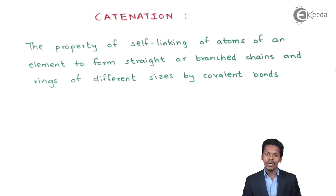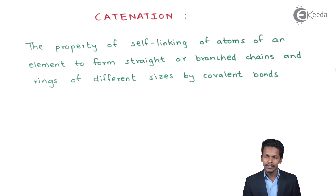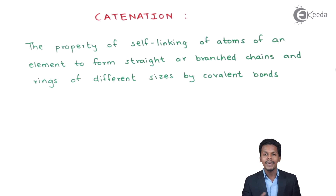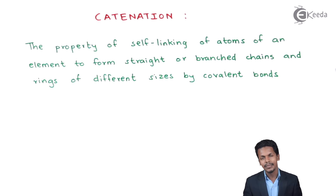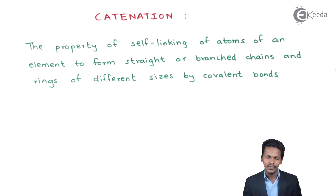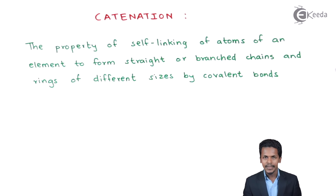In this case we are talking about carbon, because carbon is the only element in group 14 which prominently shows the property of catenation. The other elements also have some capacity to show catenation but not nearly as much. And the last element of group 14, that is lead, does not show catenation at all.